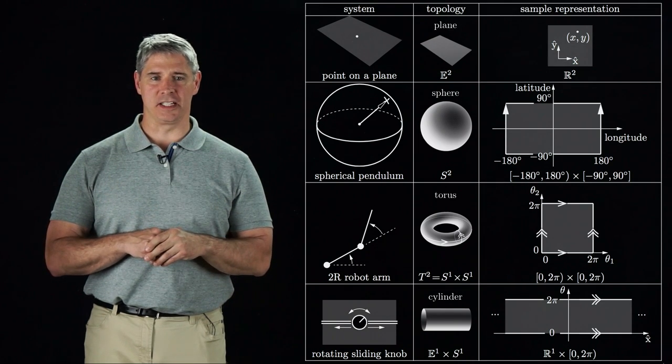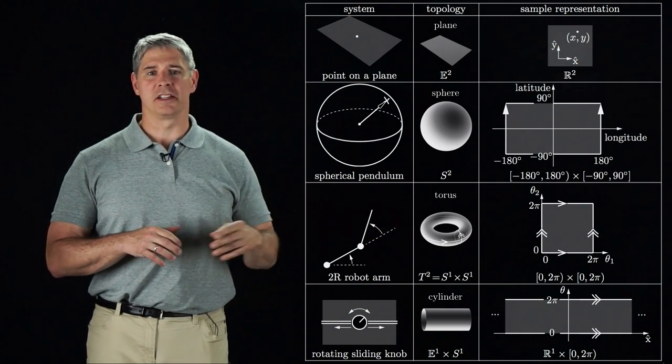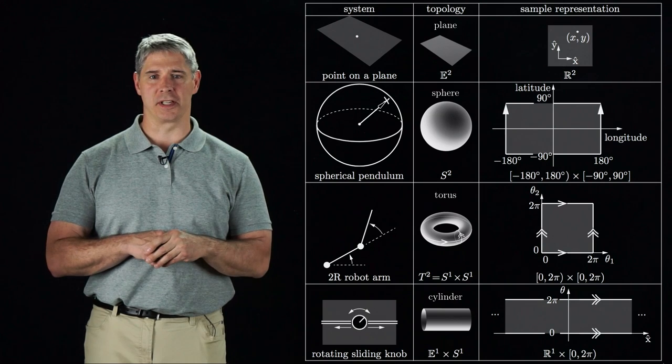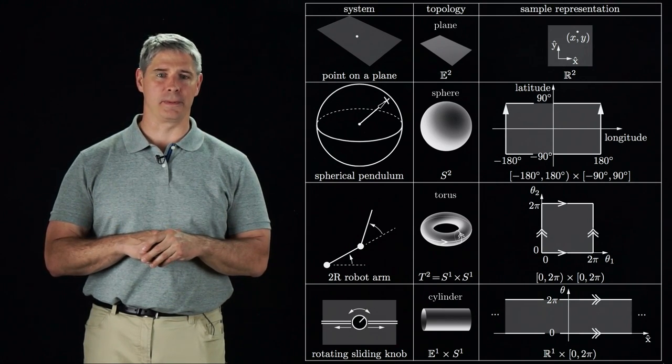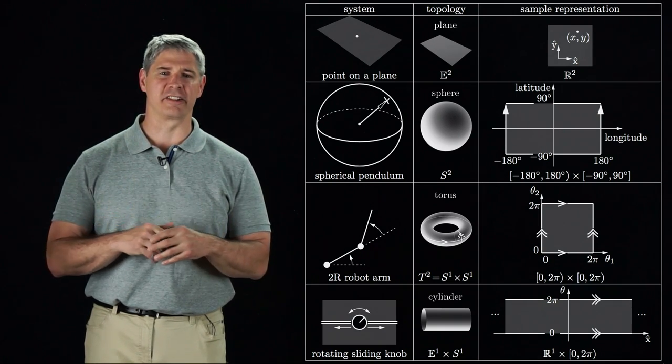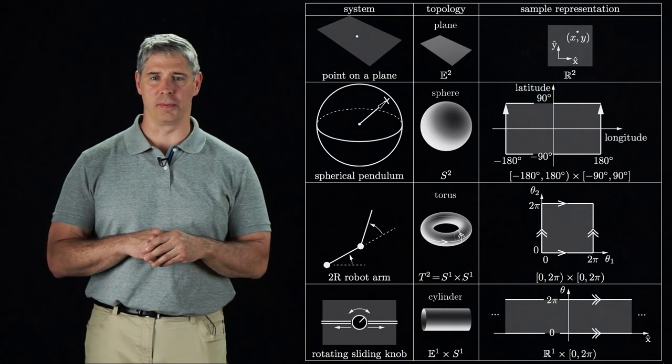The topology of each C-space, as you see in the middle column, does not depend on how we decide to represent the space using coordinates, whereas the representation in coordinates depends on an arbitrary choice, such as where we define the zero angle for each joint of the 2R robot.